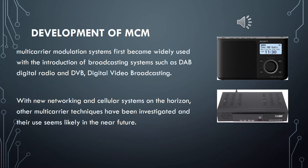However, multi-carrier modulation systems first became widely used with the introduction of broadcasting systems such as DAB, digital radio broadcasting, and DVB, digital video broadcasting, which used OFDM, the orthogonal frequency division multiplexing, which we're going to talk about in the next slides. OFDM used processing power within the receiver and the orthogonality between the carriers to ensure interference was managed. Also, other cellular systems have used multi-carrier techniques to achieve high data rates by using two or more carriers from a standard cellular system. With new networking and cellular systems on the horizon, other multi-carrier techniques have been investigated and their use seems likely in the near future.